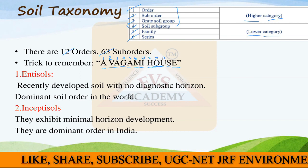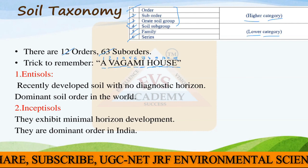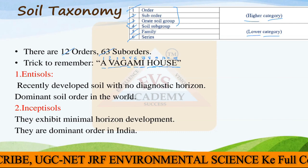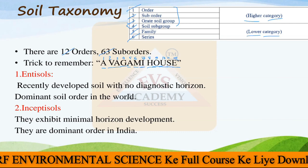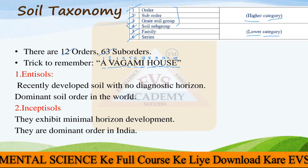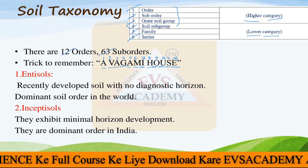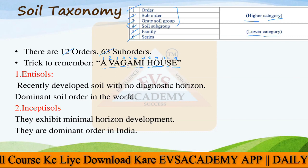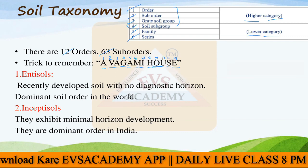You can see these are 12 in number. So one by one the properties of the different soil orders we will see in the upcoming slides. Remember the name of all soil orders - the particular trick used is 'Awagami House.'